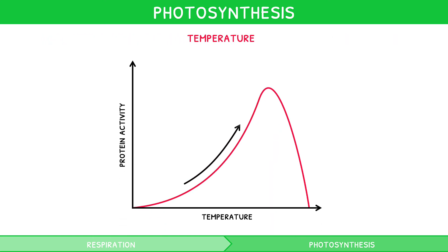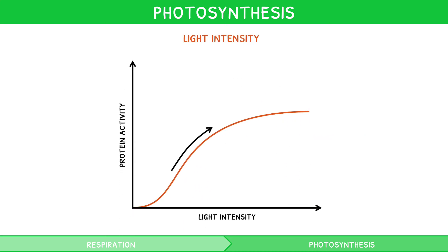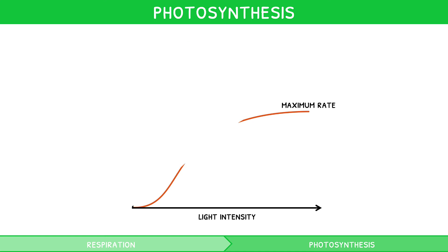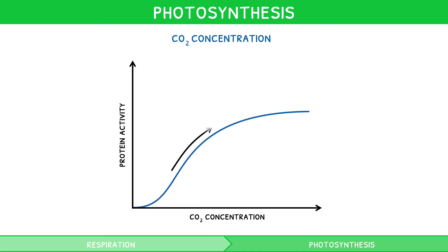As temperature increases, the rate of photosynthesis increases up to a maximum point known as the optimum temperature. After this, as temperature increases, the rate of photosynthesis decreases as the enzymes become denatured. As light intensity increases, the rate of photosynthesis increases up to a maximum rate; after this point, any further increase does not affect the rate as one of the other two factors becomes limiting. Similarly, as carbon dioxide concentration increases, the rate of photosynthesis increases up to a maximum rate, after which any further increase does not affect the rate, as one of the other two factors becomes limiting.